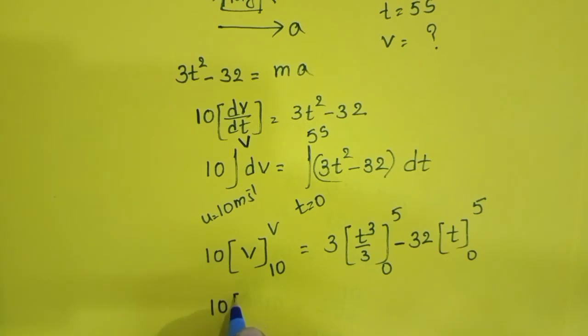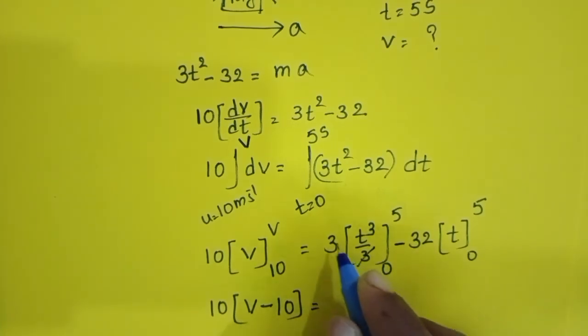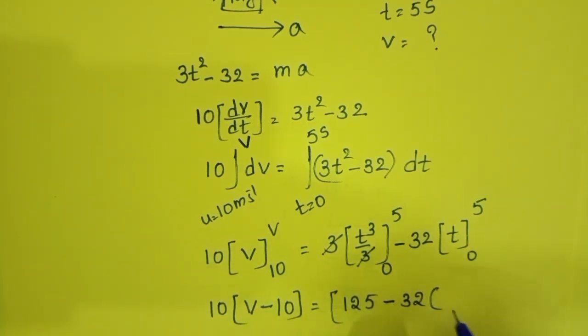10(v - 10) equals [t³] - 32[t] evaluated from 0 to 5. 5³ equals 125 minus 32 times 5.